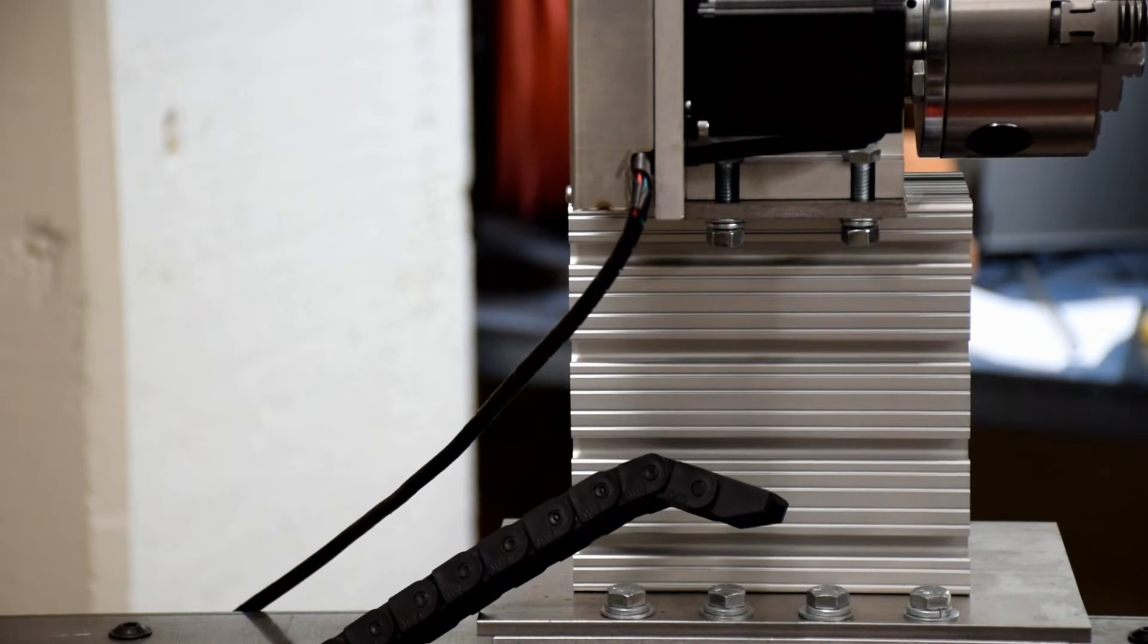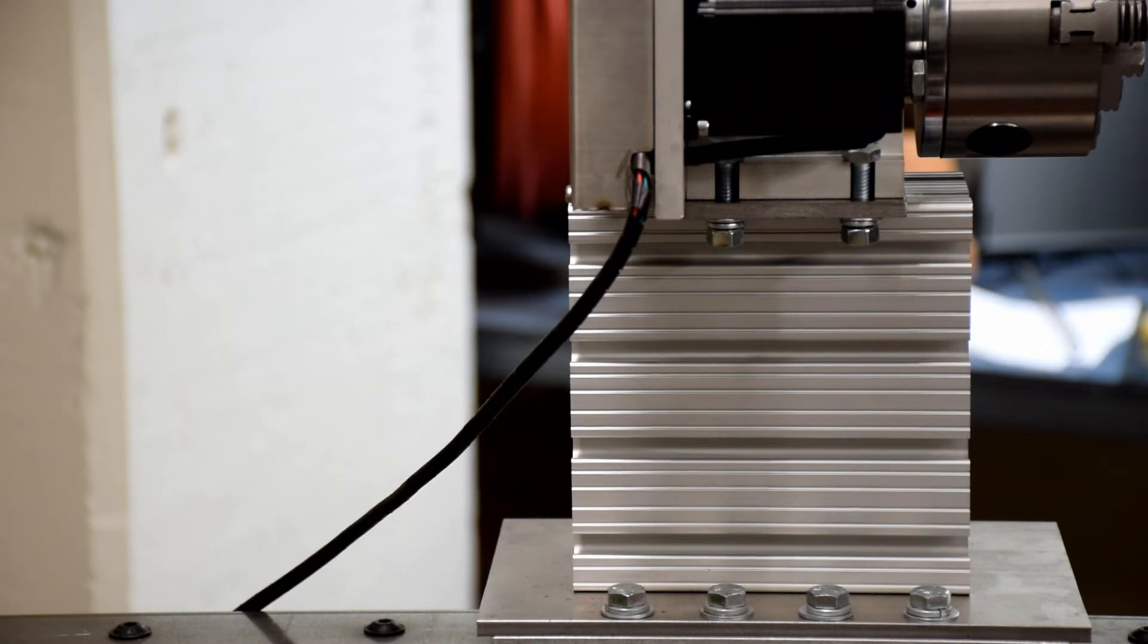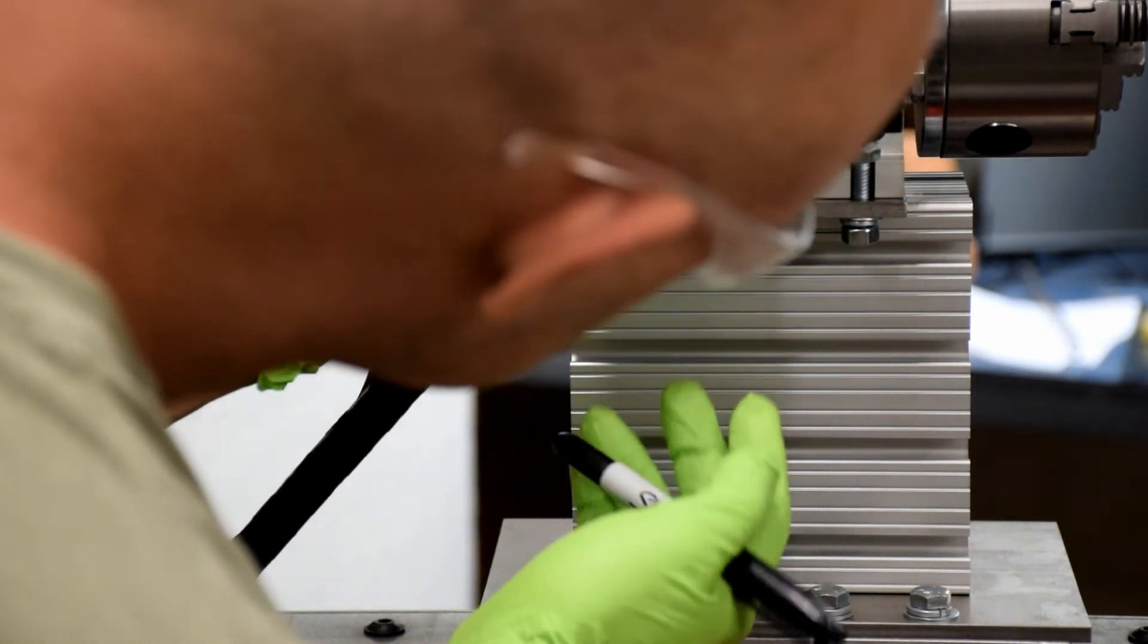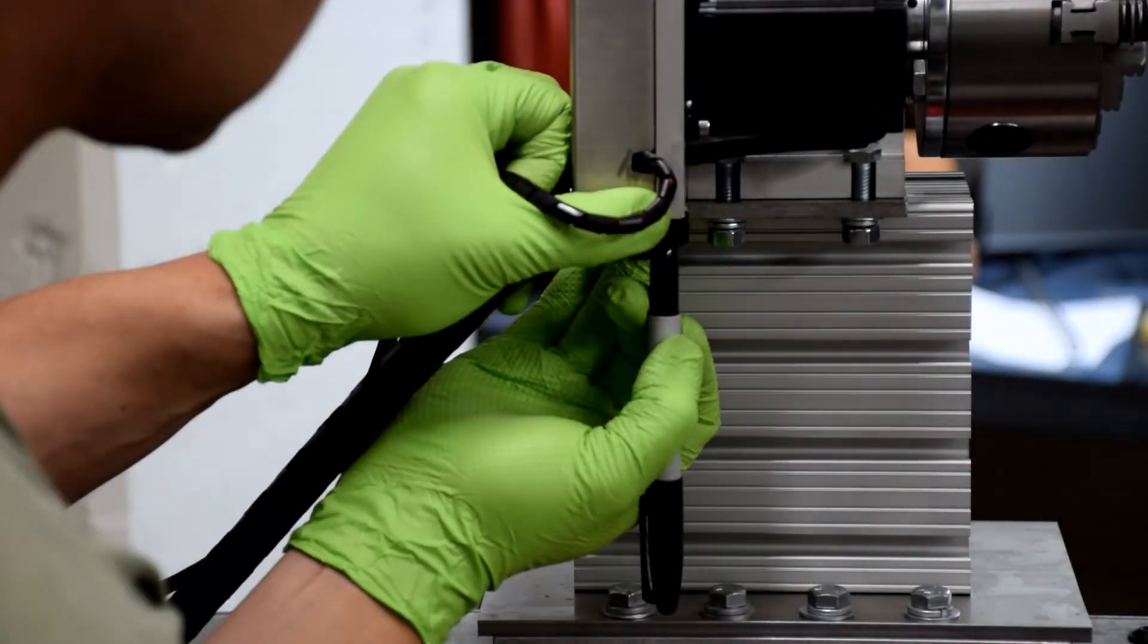The next thing we want to do is mount the cable chain. This is what keeps the wiring out of the way and allows the lathe to travel back and forth, or the tailstock to travel back and forth without any wires getting caught up. You just kind of take the cable chain, make a little mark where you're going to drill your hole.